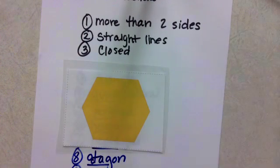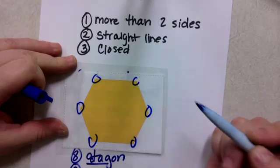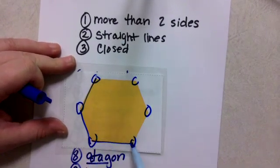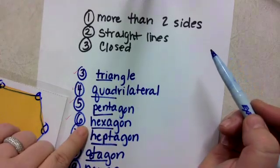Well, let's go ahead and count the sides or the angles. One, two, three, four, five, six angles. Let's check and see if the sides match. One, two, three, four, five, six. Yes. Six-sided shape is a hexagon.